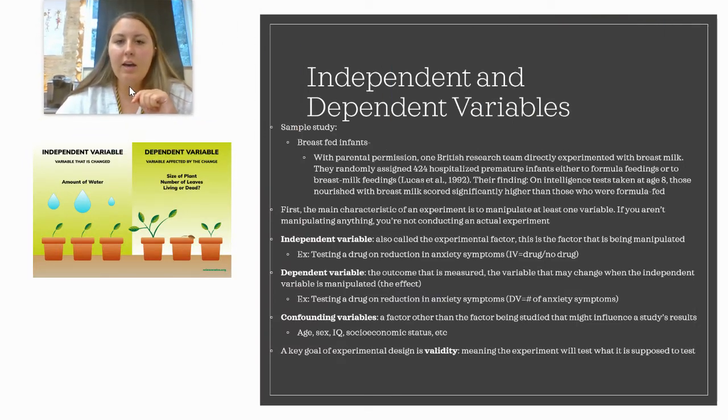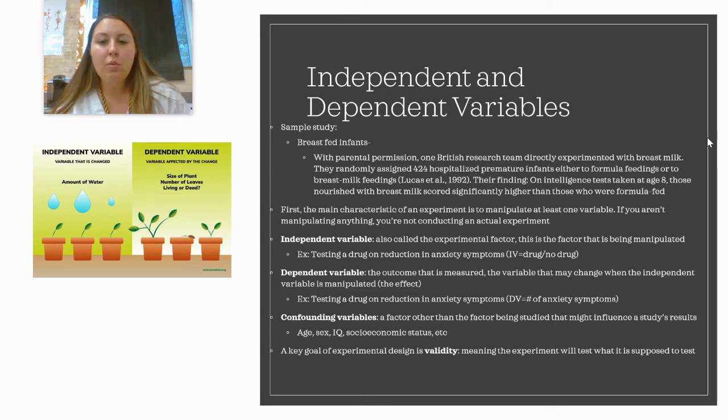Lastly, independent and dependent variables. You need to know how to do this. We're going to have practice with this in class, but let's take this example of the breastfed infants when it was actually put to the test in an experiment. With parental permission, one British research team directly experimented with breast milk. They randomly assigned 424 hospitalized preemie infants either to formula feedings or to breast milk feedings. Their finding: on intelligence tests taken at age eight, those nourished with breast milk scored significantly higher than those who were formula fed.